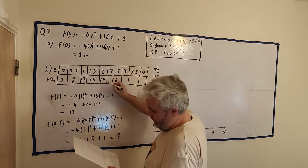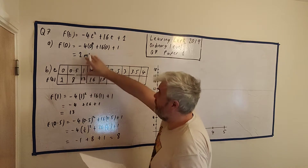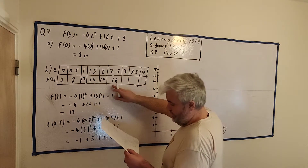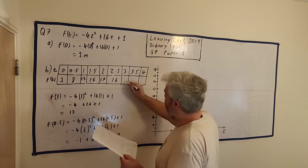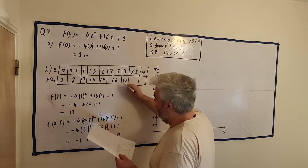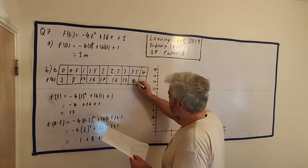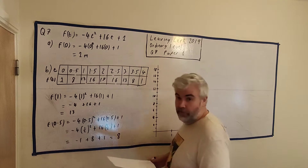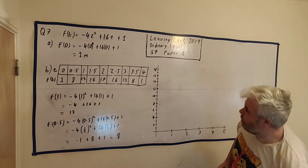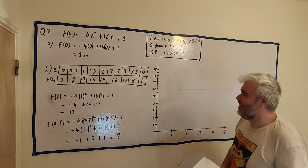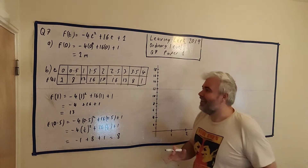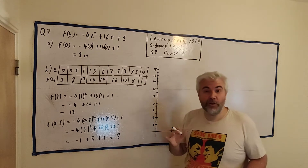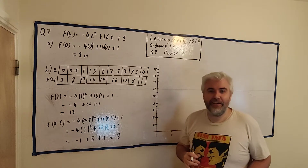Then the next values are 16, 17 — these all have the same weight, just filling the numbers in. 17, then 16, then 13. You can double check those if you want. So that's part B's table done. And this question will come up every single year — once, maybe even twice, a question like this will come up.